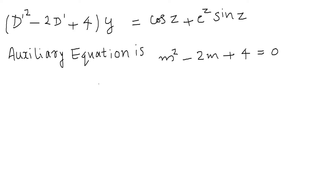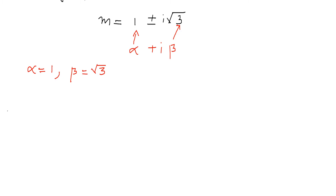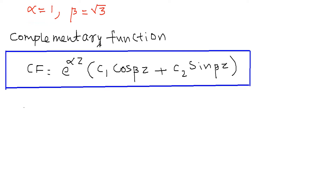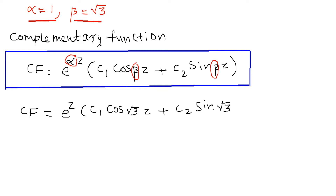After solving the auxiliary equation m² − 2m + 4 = 0, we get the roots m = 1 ± i√3. The general form of a complex root is α ± iβ, so here α = 1 and β = √3. Since we have complex roots, the complementary function uses the formula e^(αz) · (c₁ cos βz + c₂ sin βz). Substituting α = 1 and β = √3, the complementary function is e^z · (c₁ cos(√3·z) + c₂ sin(√3·z)).